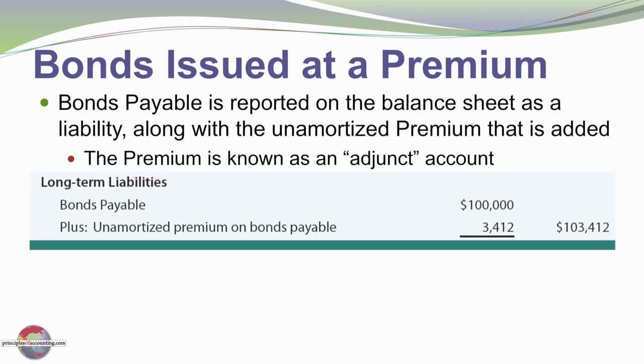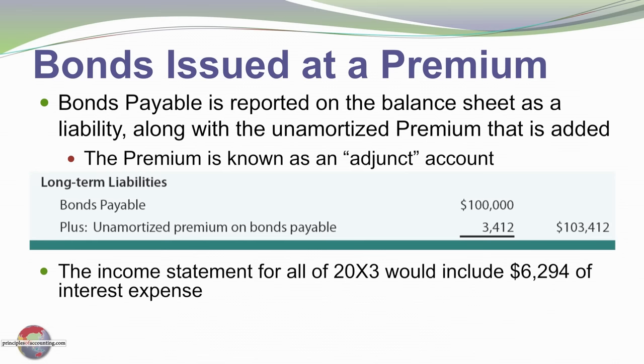Now let's consider how bonds appear on a balance sheet. Bonds payable are reported as a liability along with the unamortized premium, which is added to the bonds payable account — also known as an adjunct account. Here we illustrate bonds payable $100,000 plus the unamortized premium at a particular date of $3,412, giving total indebtedness of $103,412. The income statement for the year would include total interest expense of $6,294 — that's $3,147 recorded twice during the year.